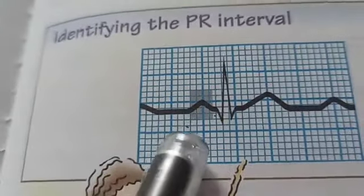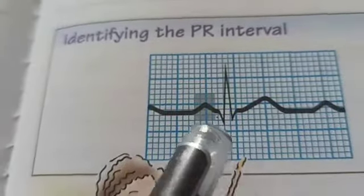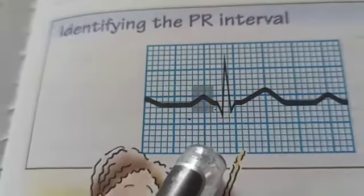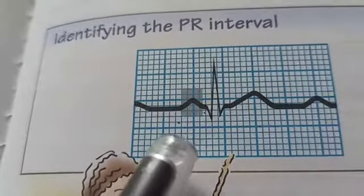The PR interval is measured from the start of the P wave to the start of the QRS complex and lasts for about 0.12 to 0.20 seconds.